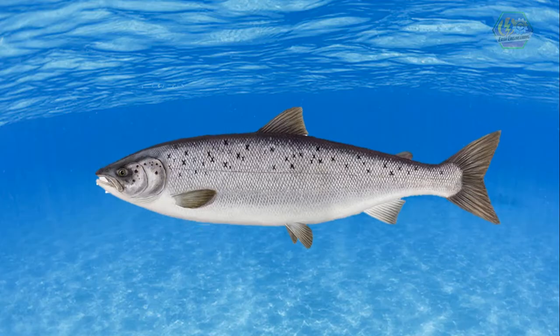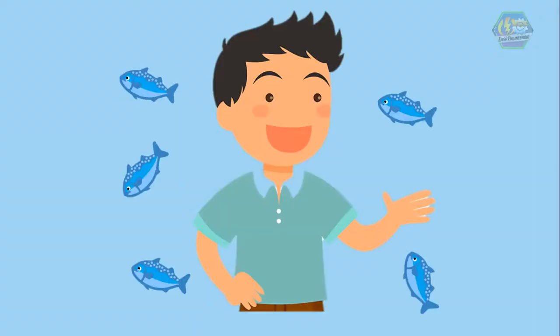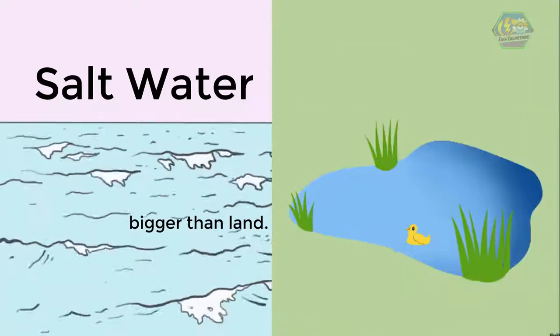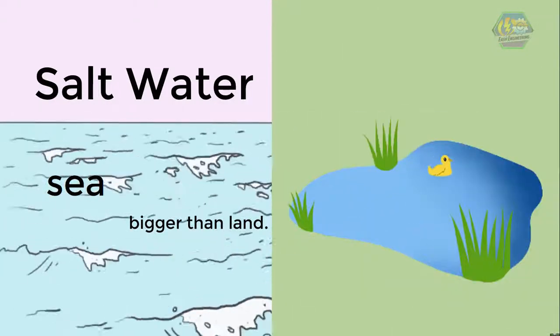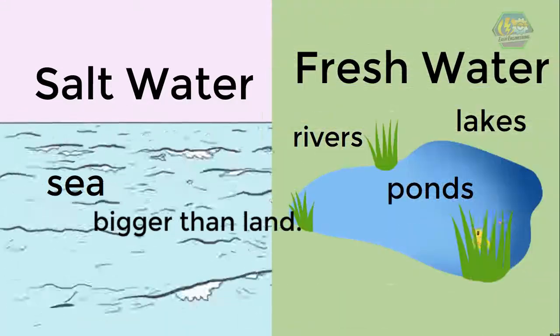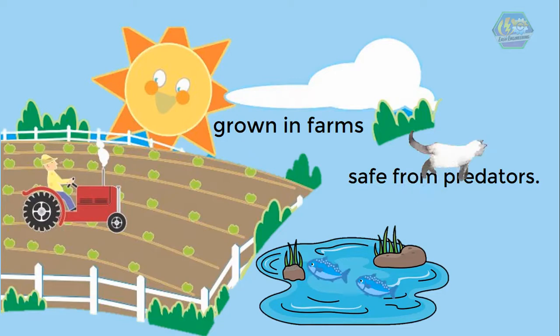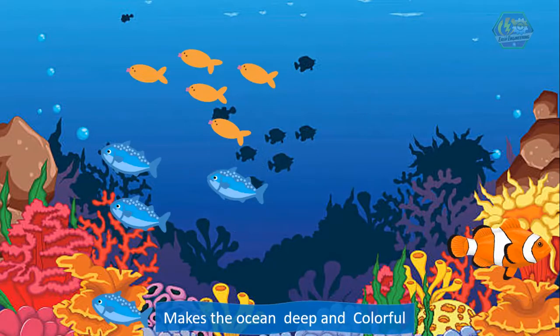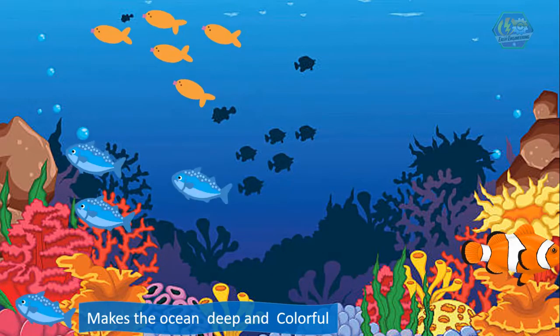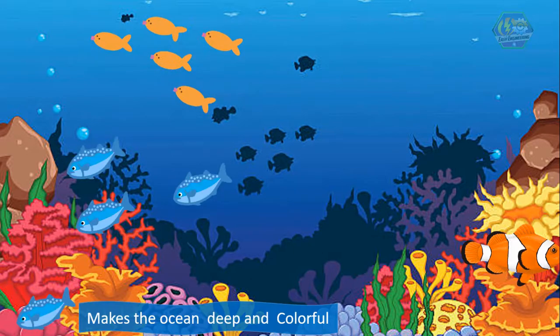But what are fish and where do they come from? We are surrounded by so many types of fish. They live in both salty and fresh water. Salt water refers to the sea, which is very big and much bigger than land. Fresh waters are rivers, lakes, and ponds. Some fish are grown in farms so that they are safe from predators. In the ocean, fish live in coral reefs and even the deepest depths. Coral reefs also make the ocean so colorful, so let's help in conserving them.